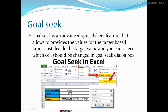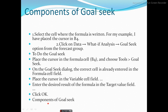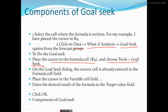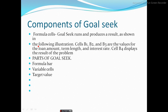Goal Seek is an advanced spreadsheet feature that allows you to provide the target-based input values. To use it, go to Data, then What-If Analysis, then Goal Seek. Place the cursor in the formula cell, for example B4, and choose Tools then Goal Seek. The correct cell is already entered in the formula cell field. Place the cursor in the variable cell field, enter the desired result in the target field, and click OK. The components of Goal Seek are: formula cell, variable cell, and target value.